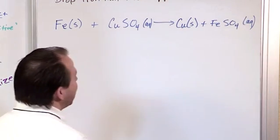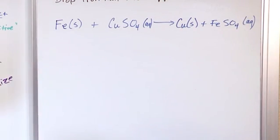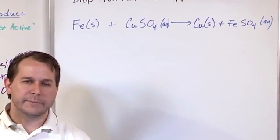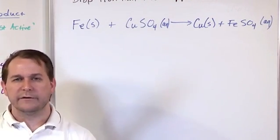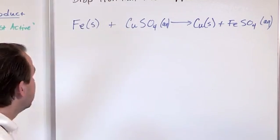So if you're asked to predict something, that's what you do. You can use the activity series, which again, all these metals want to be oxidized. This is just ranking them to tell you which ones want to be oxidized more, so you can predict what's going to happen.